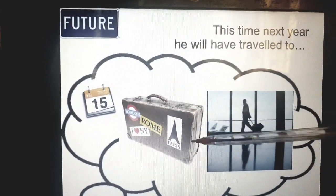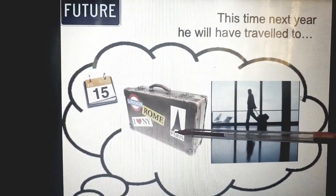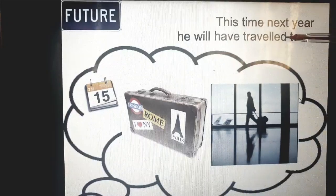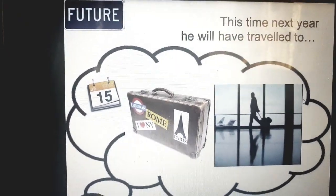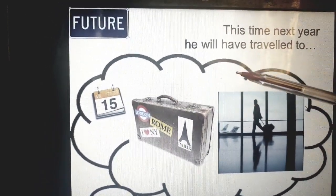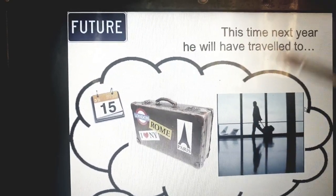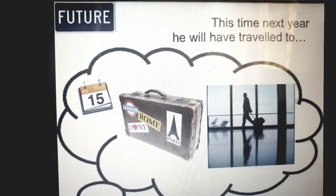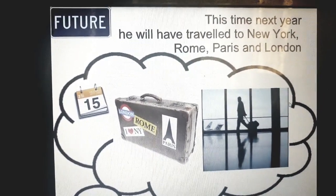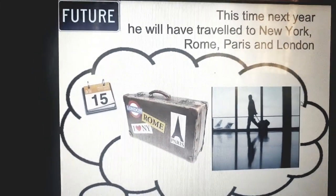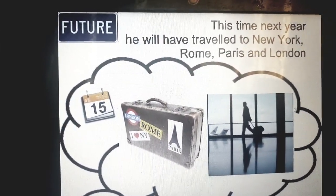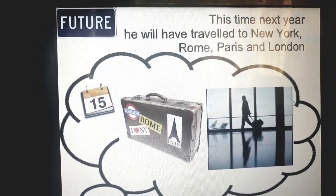This time next year — look at this. This is a traveling bag and a calendar, and he is holding a bag. So this time next year, he will have traveled to Paris, for example. He will have traveled around the world. He will have traveled to Italy, to Alaska — whatever it is. So these are achievements. This time next year, he will have traveled to New York, Rome, Paris, and London. He might travel to many places, not just one place.